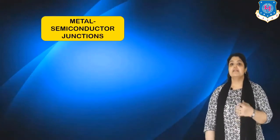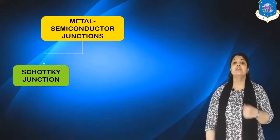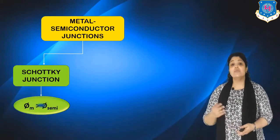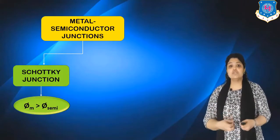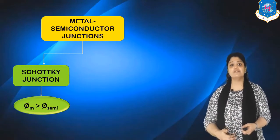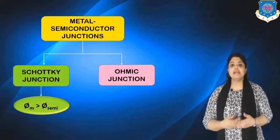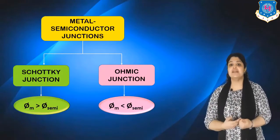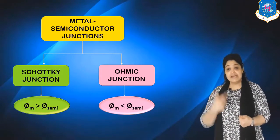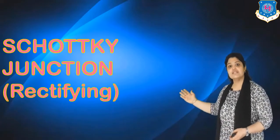Now let us classify the metal semiconductor junctions. The first type is known as a Schottky junction, which has the condition φm greater than φ_semi — meaning the metal has a higher work function than the semiconductor. The second category is an ohmic junction, which has the condition φm less than φ_semi — meaning the metal has a lower work function than the semiconductor.